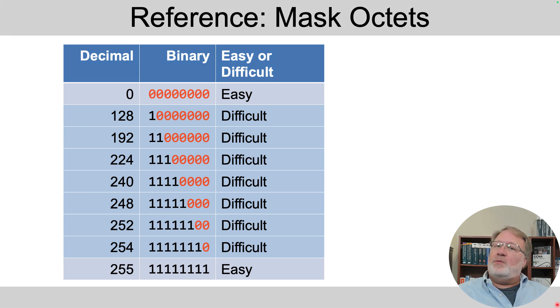For reference, here's a repeat of the nine possible values you'll find in a dotted decimal mask in their binary equivalent. When the decimal value is a 0 or 255, that octet's really easy to work with for some subnetting processes, like the one we're talking about here.